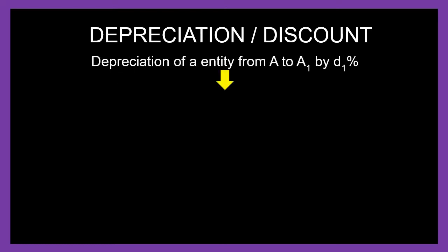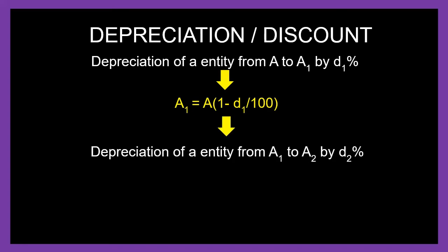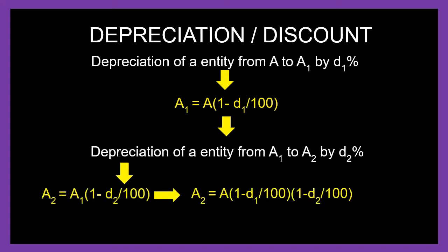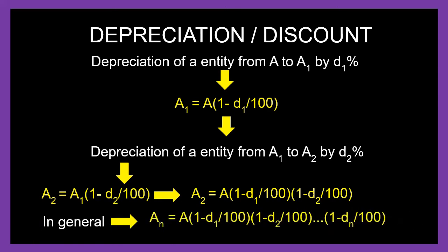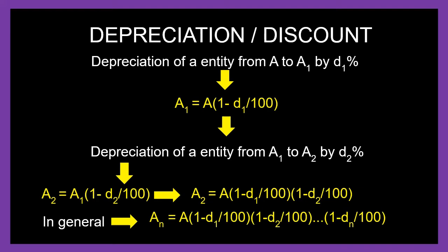Depreciation or discount over time periods is another application of percentages. Depreciation is similar to loss percentage: if an entity changes from value A to A1 with depreciation percentage D1, then A1 equals (1 minus D1 by 100) into A. For successive depreciation to A2, we get A2 equals A1 into (1 minus D2 by 100), and substituting for A1: A2 equals A into (1 minus D1 by 100) into (1 minus D2 by 100). In general, An equals A into (1 minus D1 by 100) into (1 minus D2 by 100) and so on.